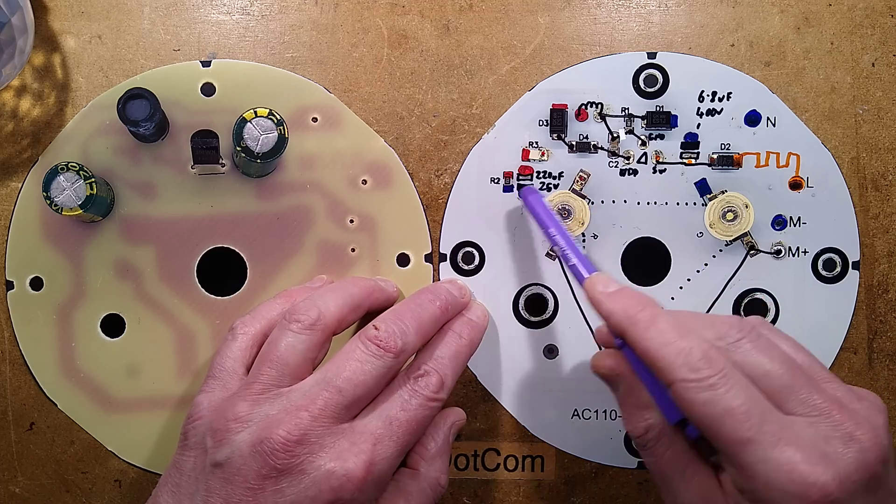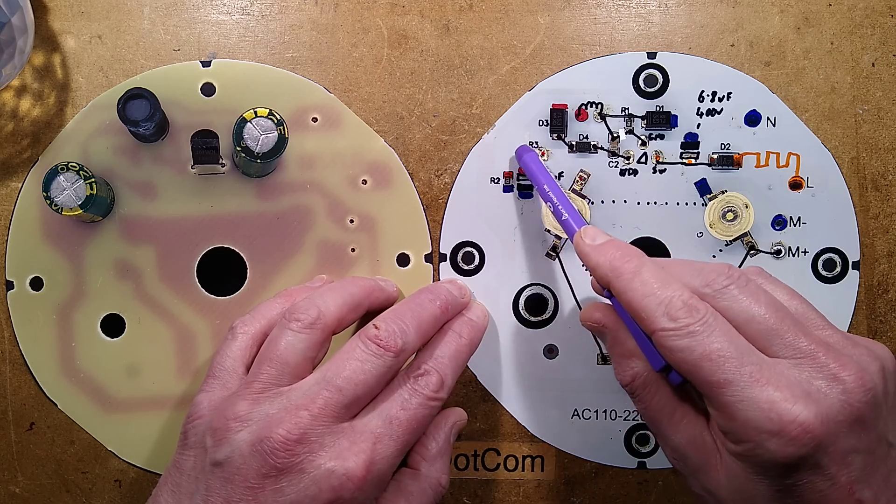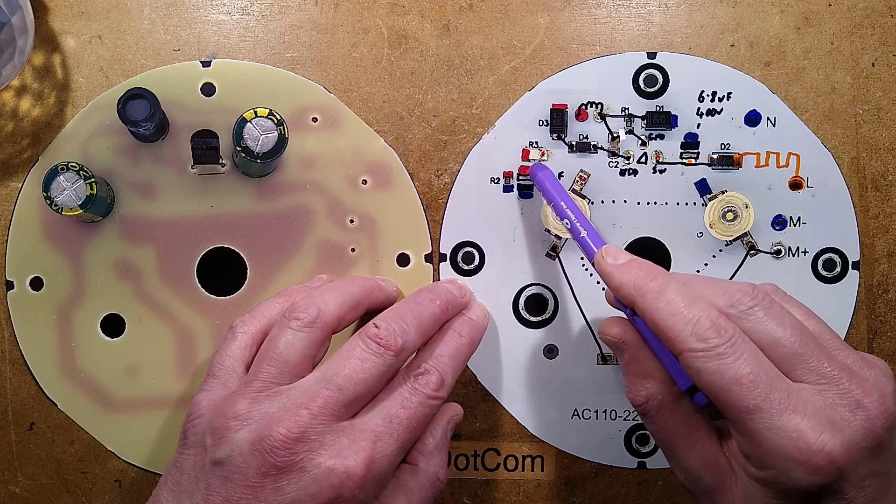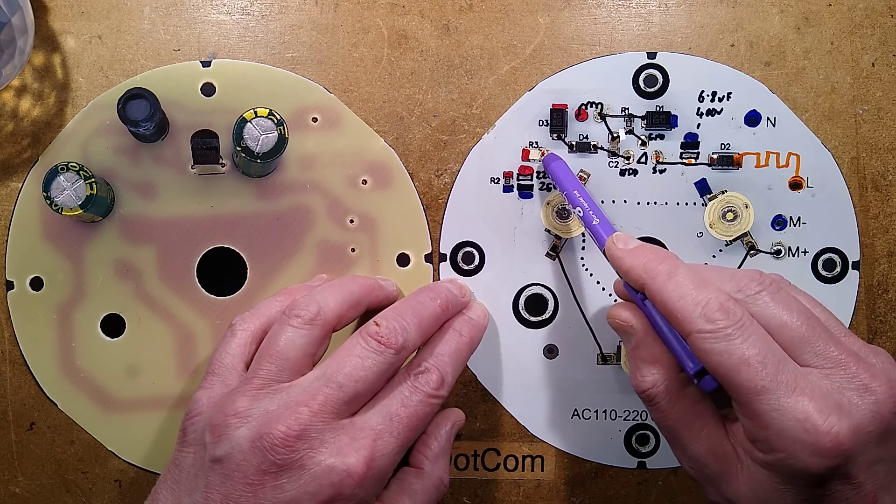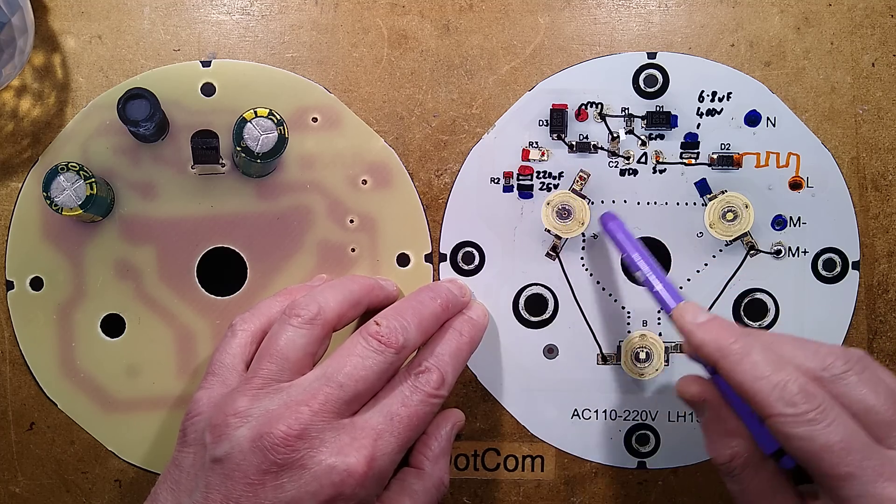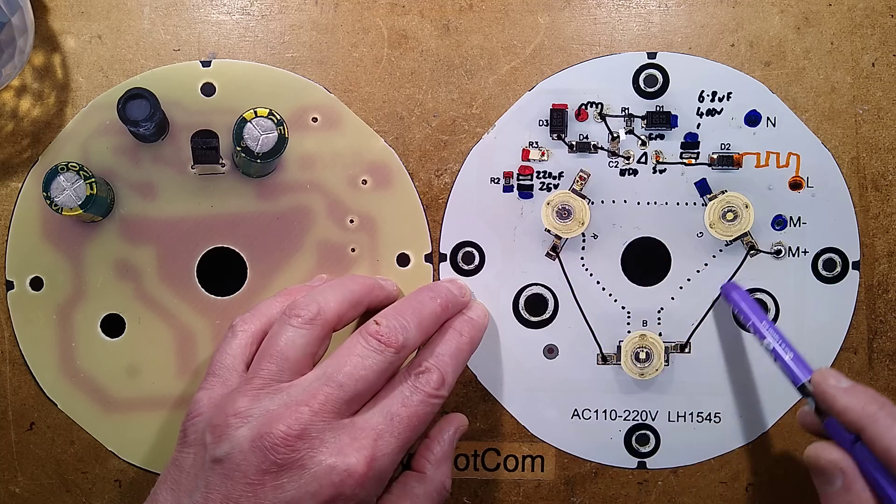And that 10 volts is then applied across the LEDs via this 15 ohm resistor which is upside down. I wonder why they've, it looks hand soldered, like they've added that in afterwards. And you've got the three LEDs in series, you've got the red, the blue and the green.